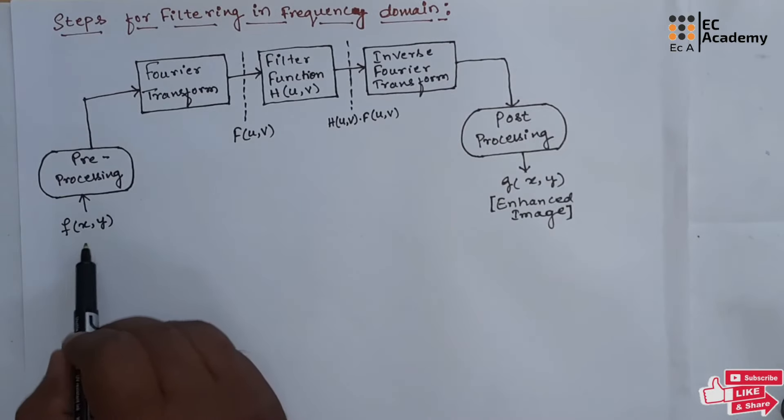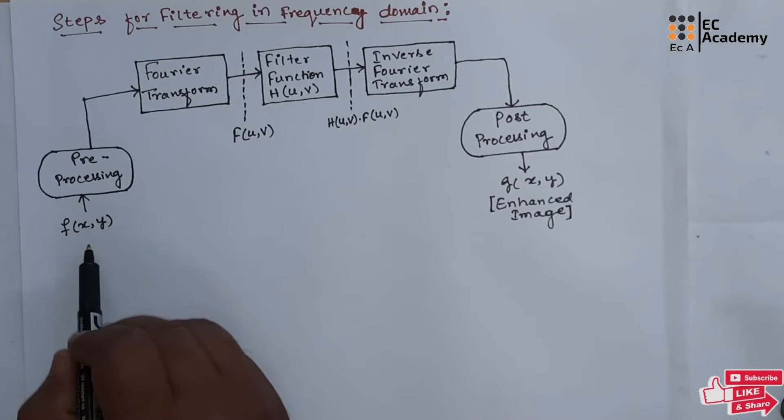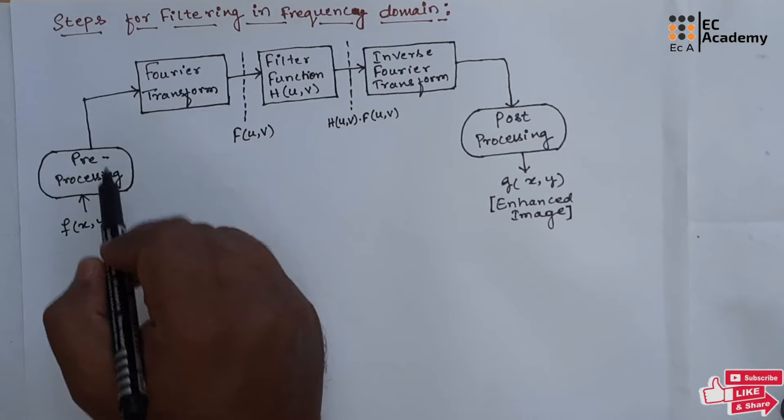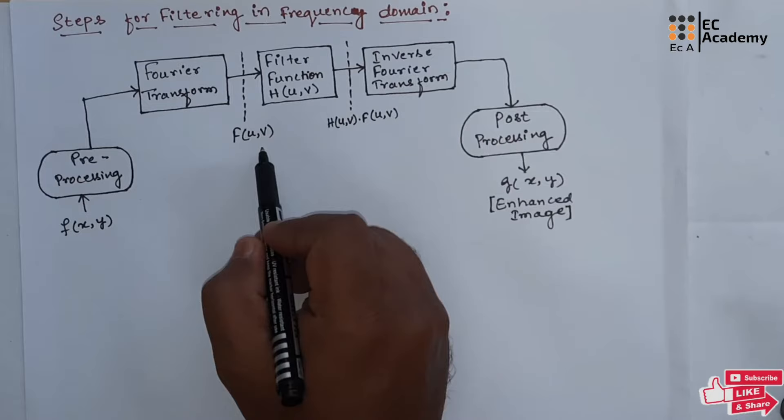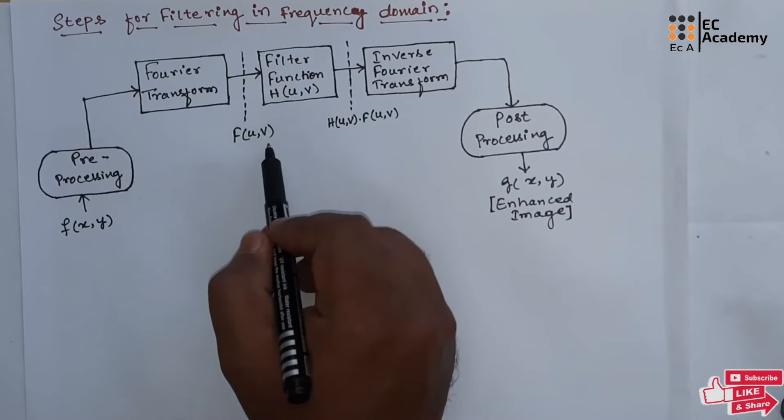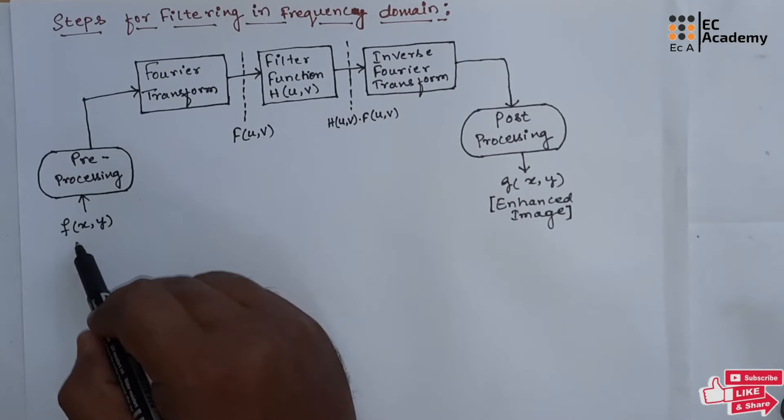Here the image f which is in spatial domain is pre-processed, then Fourier transform is applied on that image to get f of u, v. This is the Fourier transform representation of the image f of x, y.